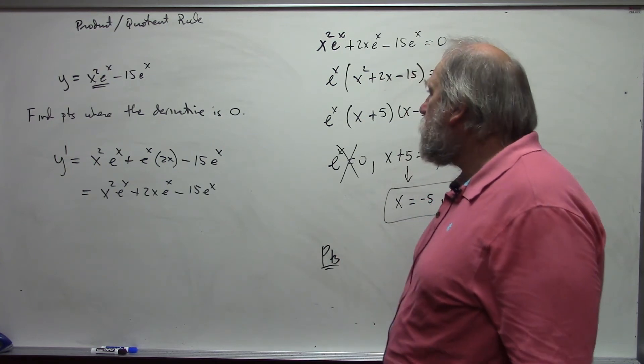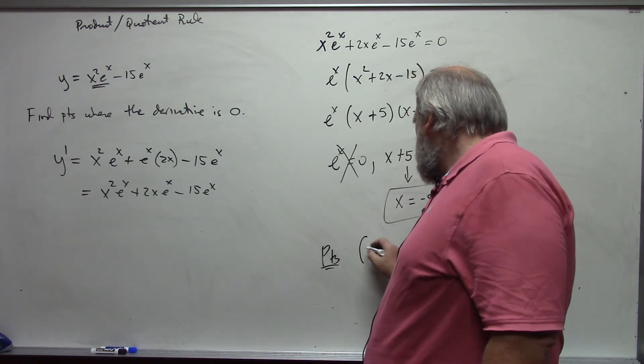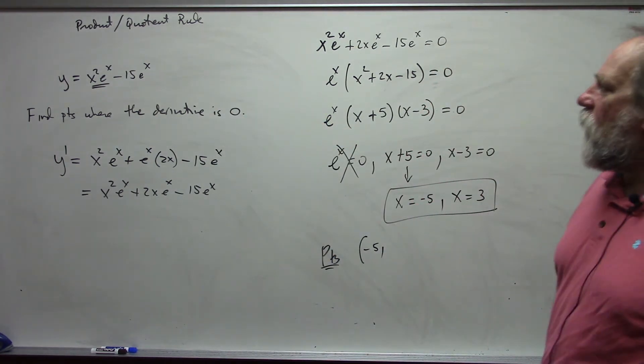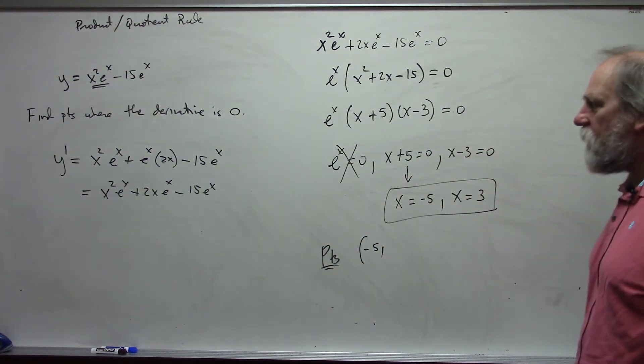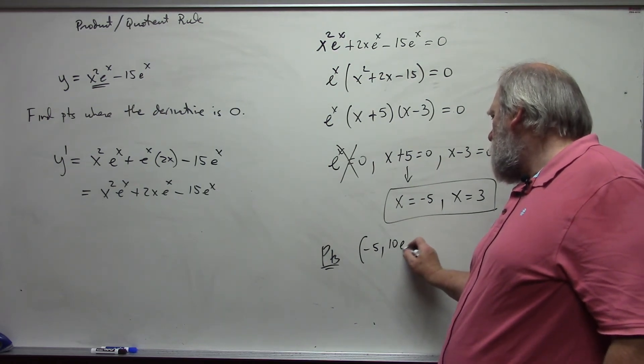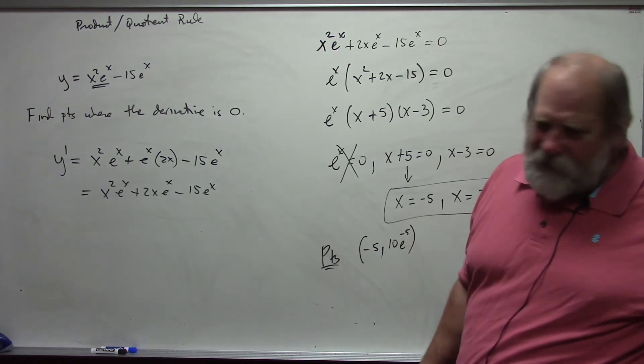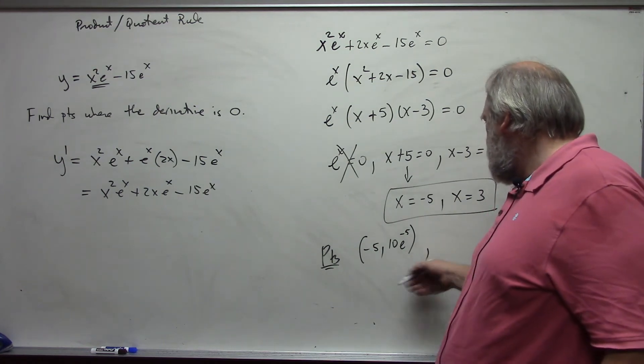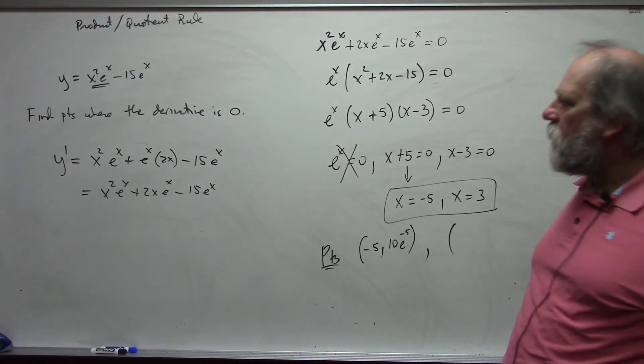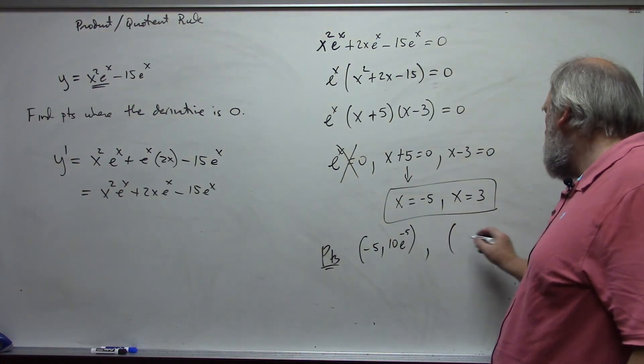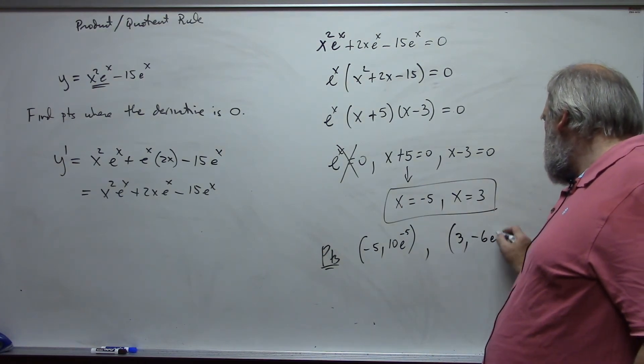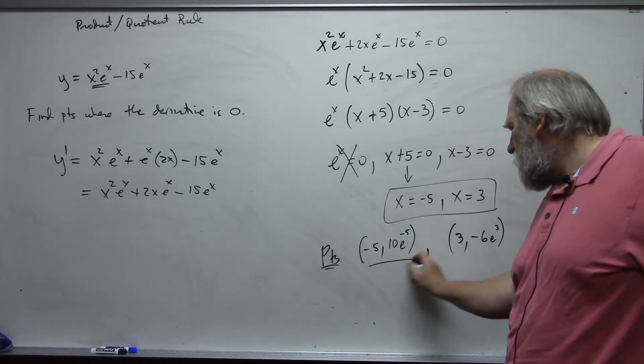The points. When x is negative 5, if I put that into my function, my y value becomes 25 e to the negative 5 minus 15 e to the negative 5, which is 10 e to the negative 5. And you can leave it like that or use a decimal approximation. When x equals 3, I get 9 e cubed minus 15 e cubed, and so that is negative 6 e cubed. These are my points.